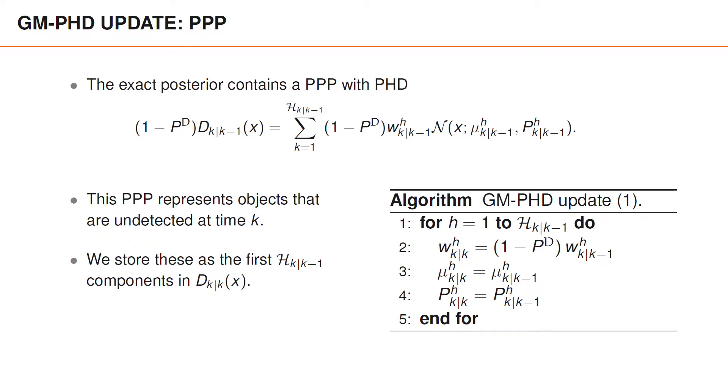That is, in the first part of the Gaussian mixture PHD update, we run a for-loop over h from 1 to the number of predicted components, and for each component, we set the updated weight to 1 minus PD times the predicted weight, whereas the updated mean and covariance are identical to the predicted mean and covariance.